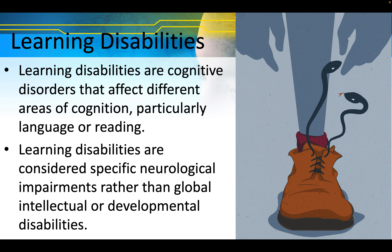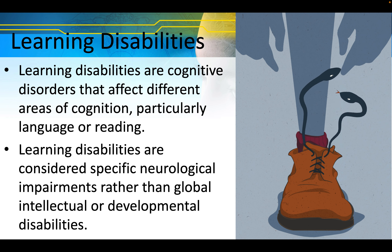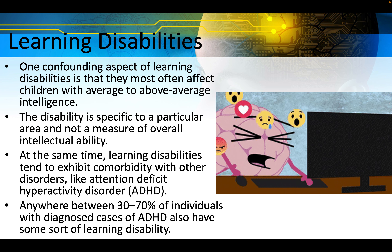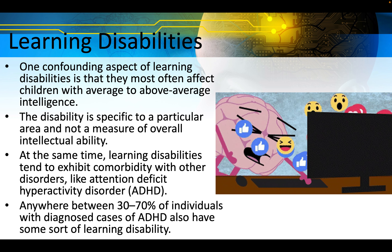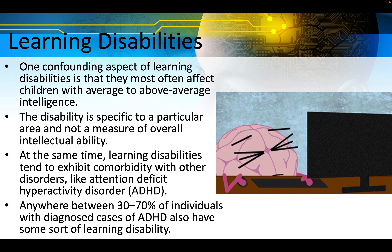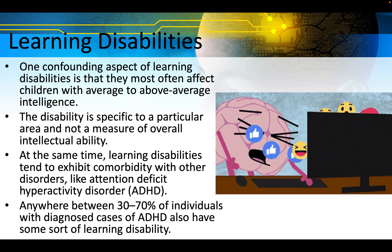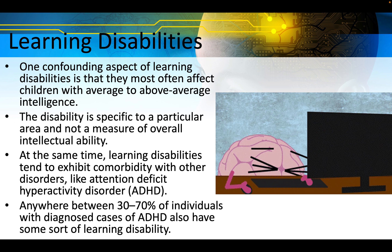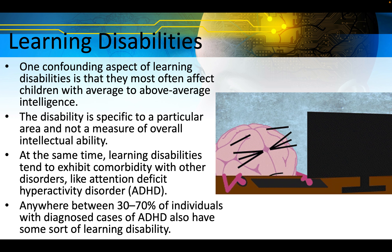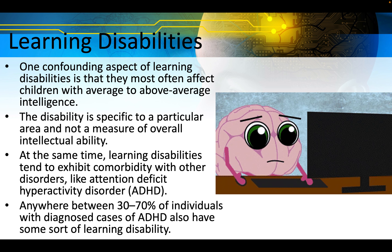Learning disabilities are cognitive disorders that affect different areas of cognition, particularly language or reading. They are considered specific neurological impairments rather than global intellectual or developmental disabilities. One confounding aspect is that they most often affect children with average to above average intelligence — the disability is specific to a particular area and not a measure of overall intellectual ability. Learning disabilities also tend to exhibit comorbidity with other disorders like ADHD — anywhere between 30 and 70 percent of individuals with ADHD also have some sort of learning disability.